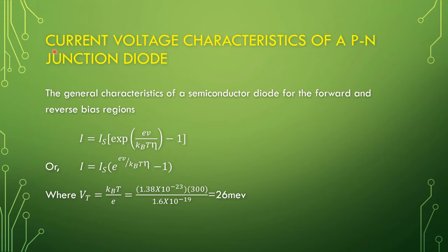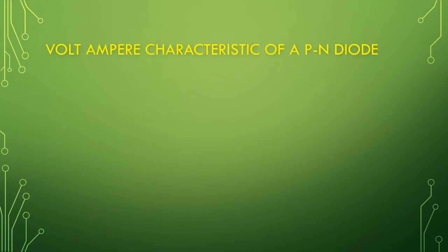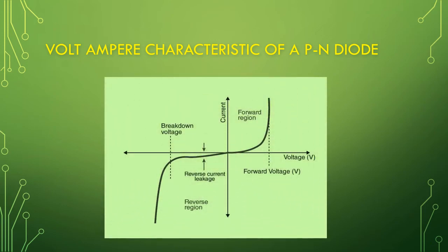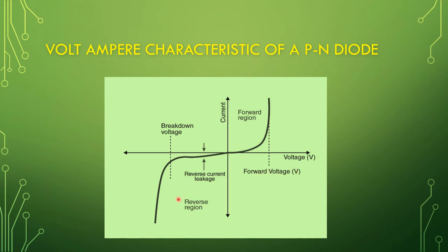In this slide, we see the plot of the volt-ampere characteristics of a PN junction diode. The horizontal axis is voltage V and the vertical axis is current. The right side shows the forward voltage region — the current drawn under forward bias condition — and the left side is the reverse bias region.